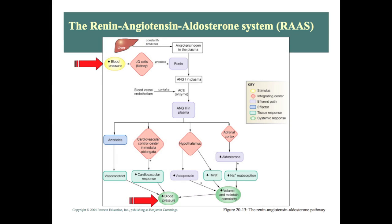The main purpose of the renin-angiotensin-aldosterone system is to regulate blood pressure. We need to do that in a way that if we have low blood pressure, we need to increase it, as we see in this diagram. I'm going to be talking about what happens if our blood pressure is low.